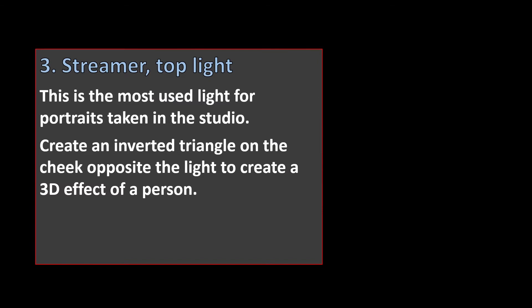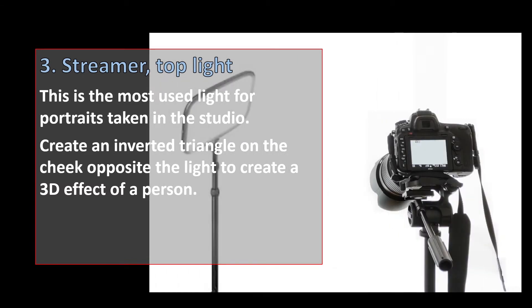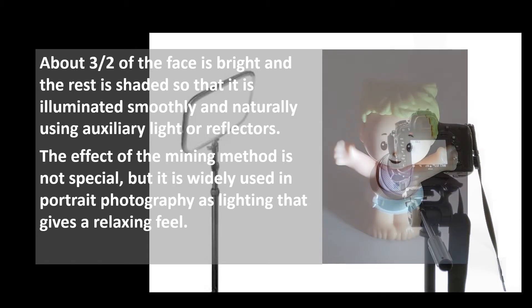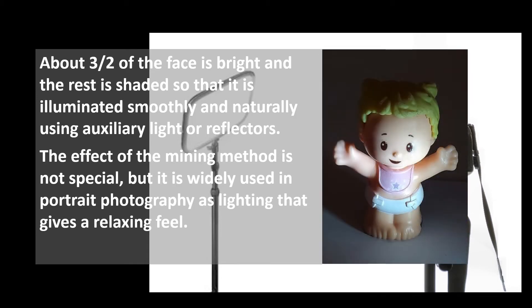3. Rembrandt (Three-Quarter) Light. This is the most used light for portraits taken in the studio. It creates an inverted triangle on the cheek opposite the light to create a 3D effect. About three-quarters of the face is bright and the rest is shaded, so it is illuminated smoothly and naturally using auxiliary light or reflectors. This lighting gives a relaxing feel and is widely used in portrait photography.